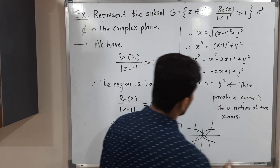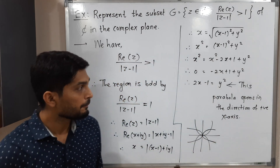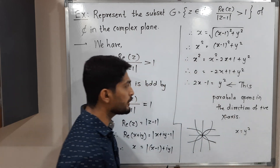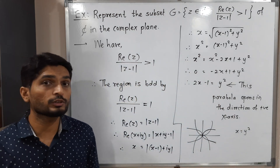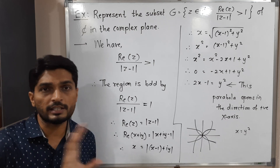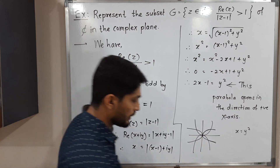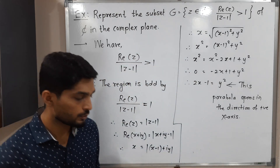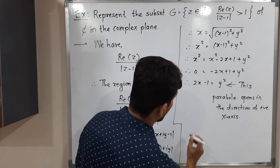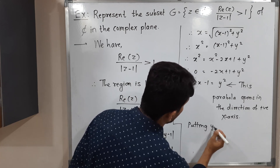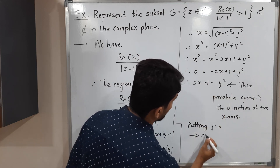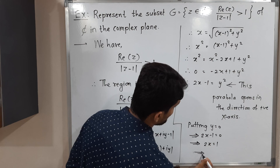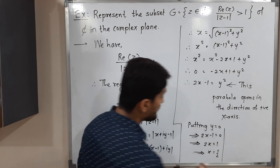This is not the standard equation of a parabola (x = y squared), since we have 2x and a minus 1 term, so the parabola is slightly shifted. To find its vertex, I put y equal to 0. Substituting y = 0 gives 2x minus 1 equals 0, so 2x equals 1, and x equals one-half.